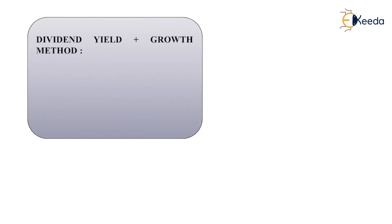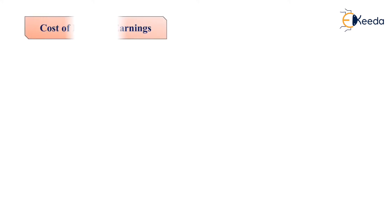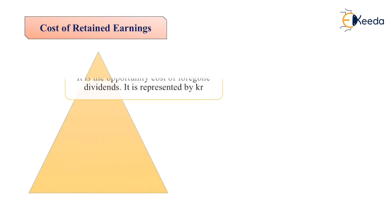In the dividend yield plus growth method, the formula is: Ke equals (DPS / MPS or NP) plus g, where g is the growth rate, NP is net proceeds, MPS is market price per share, and DPS is dividend per share.